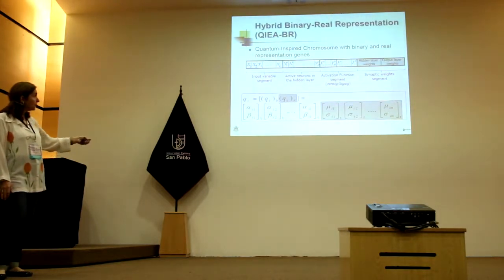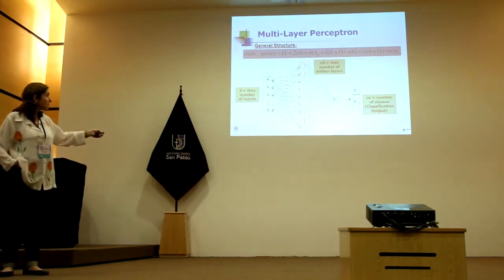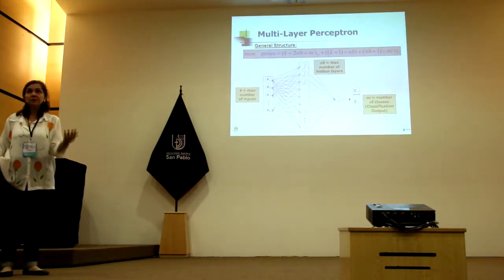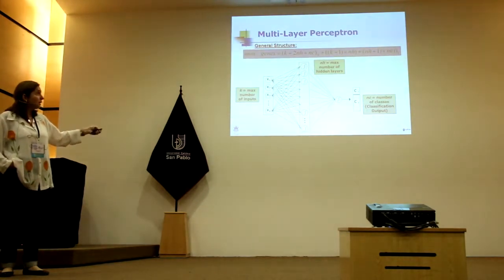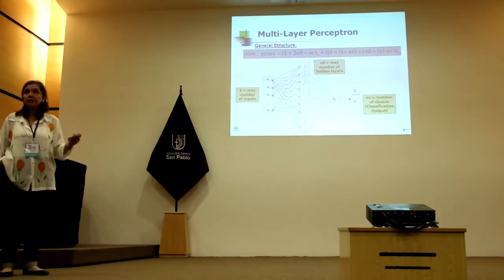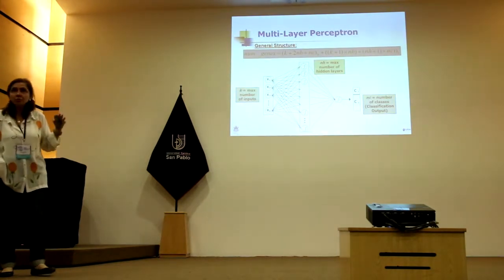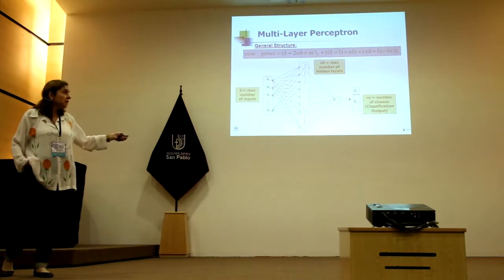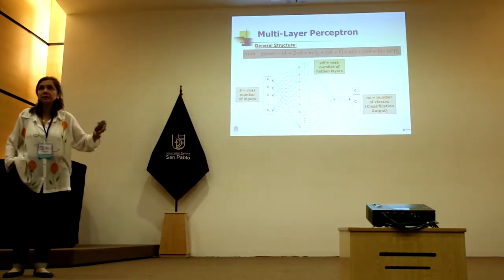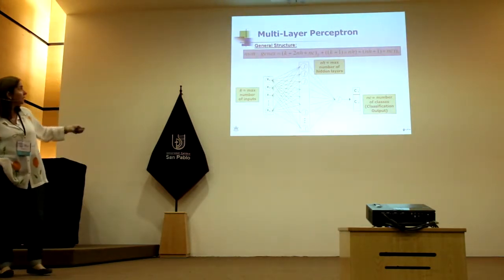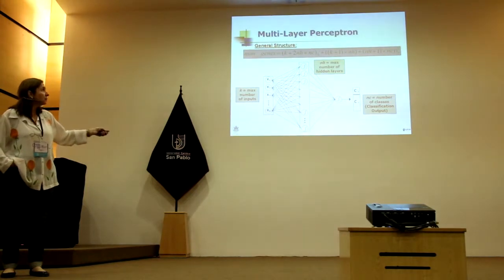So we have a binary part and a real part. The topology has K, the maximum number of inputs available in the dataset, and NH, the maximum number of hidden neurons in the hidden layer. The output depends on the number of classes: four classes gives four output neurons, ten classes gives ten. The number of genes is determined by the number of inputs, the number of neurons, and the number of classes.